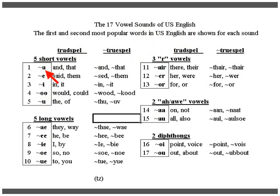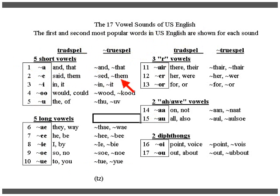For the short vowels, this is the symbol for the 'a' sound as in 'and' and 'that' — see the TrueSpell symbol. There is the 'a' sound, spelled actually the same way as in tradspell, traditional spelling. This is the 'e' sound as in 'and' and 'them,' spelled with the e. The short 'i' sound is spelled in 'it' and 'in,' the same spelling in TrueSpell as in tradspell.